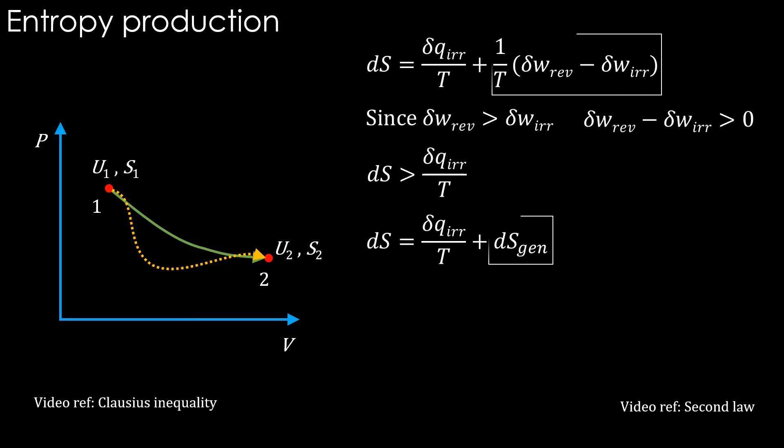These two terms must be equal: ds generated equals 1 divided by T times delta W reversible minus delta W irreversible. What is the difference term? As we have already seen, it is the lost work in the irreversible process. Therefore, ds generated equals the lost work divided by T.